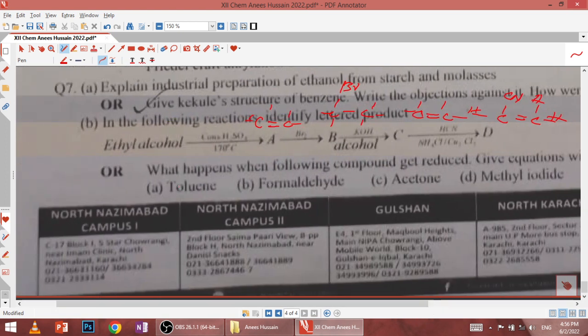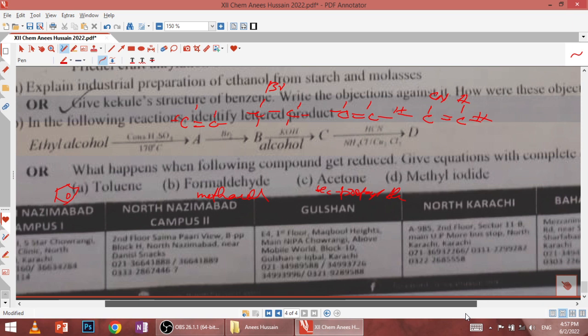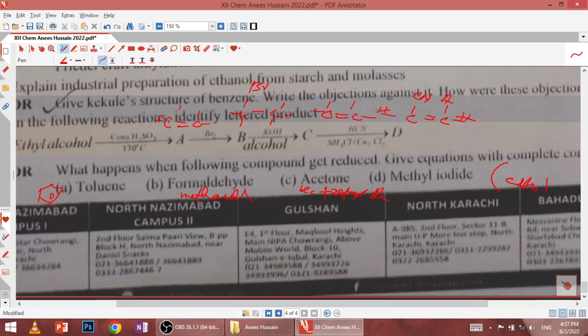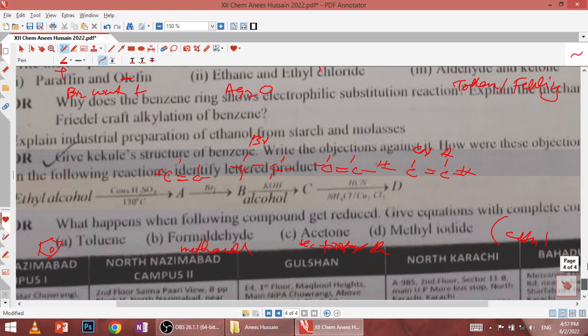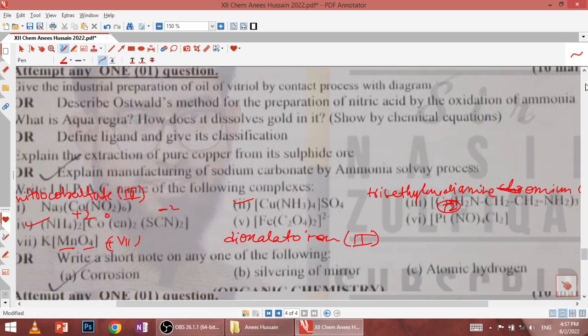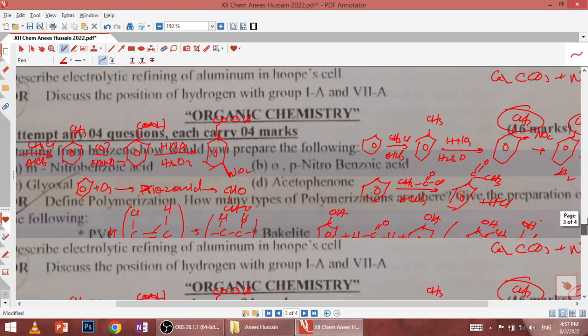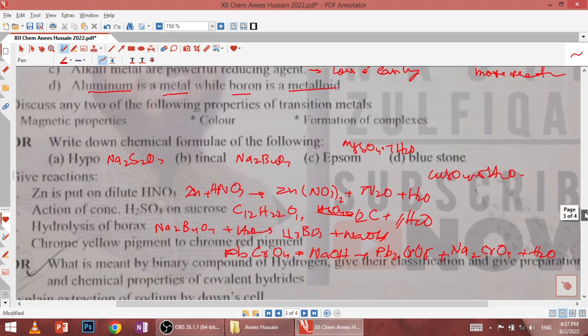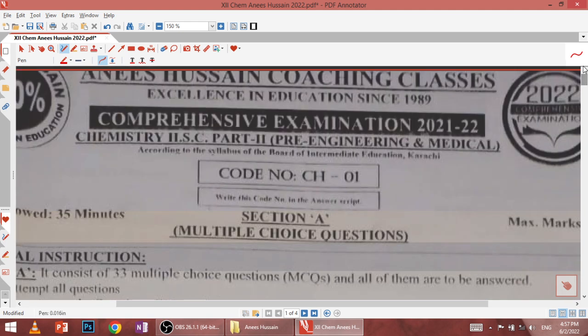What happens when the following compounds get reduced? Benzene reduces to cyclohexane. Formaldehyde with hydrogen gives methanol. Acetone becomes secondary propyl alcohol. Acetyl chloride reduces to ethane. The whole paper is solved from Anis Hussain's coaching center. I hope there are many things you can understand and it will be easy to revise. Inshallah, with different colleges and coaching centers, if you want to download it, you can download it. Allah Hafiz.